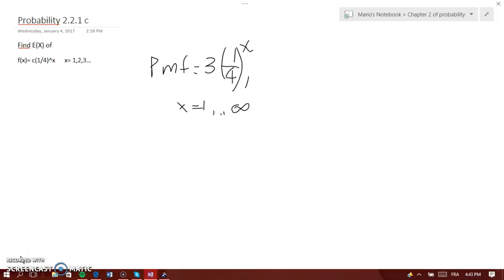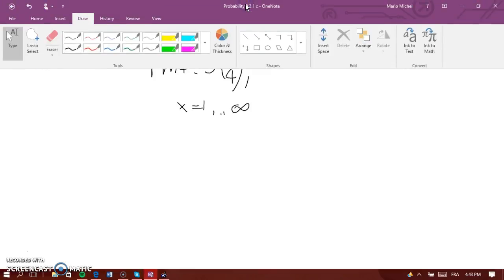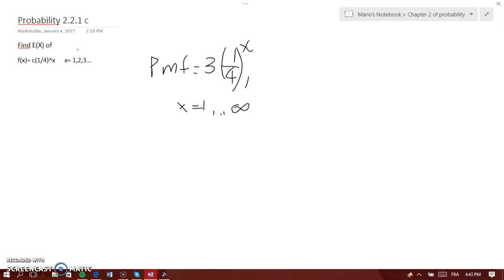Here it says to find the expected value of this function, but as I already worked out a problem earlier and showed how to find the constant C, we are going to use this PMF instead of this one, because you have to find the constant C first to make the new PMF so you can find the expected value.